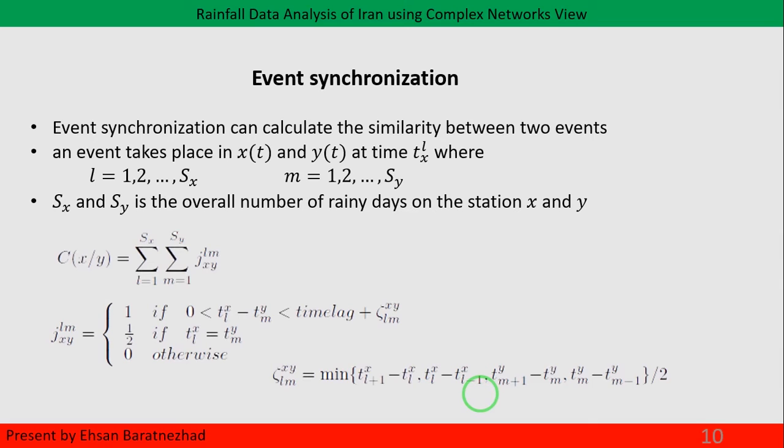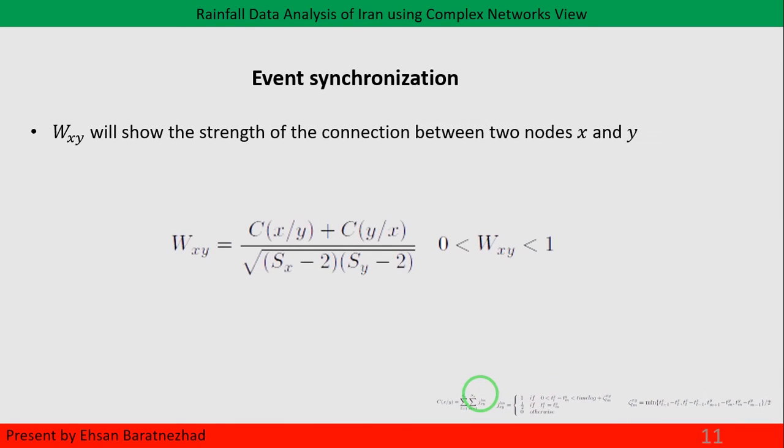Let x and y each be two places for which we have temporal data, and we want to calculate the similarity between the events that happen in those places. First, we define a time lag — that means if two events, one from x and one from y, take place within the time lag, we can conclude that the events are synced and we add a point to the similarity. After comparing all the events in x to the events in y, by normalization we will find out how much x and y are similar to one another.